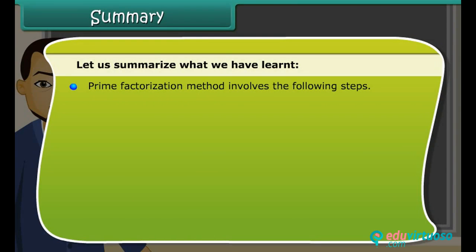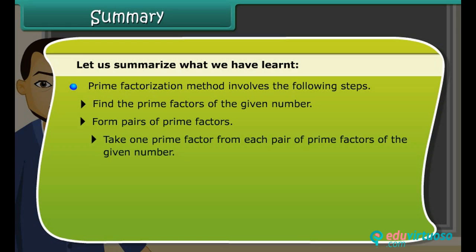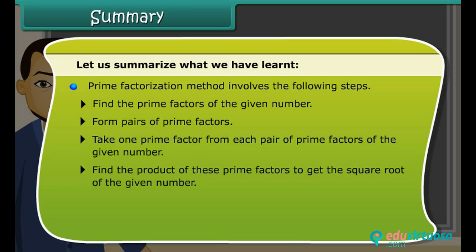Prime factorization method involves the following steps: find the prime factors of the given number, form pairs of prime factors, take one prime factor from each pair of prime factors of the given number, find the product of these prime factors to get the square root of the given number.